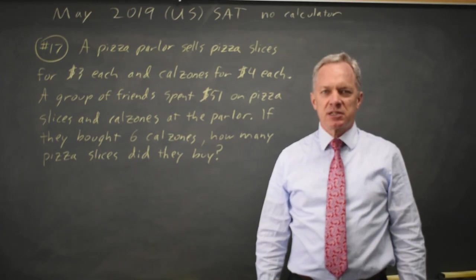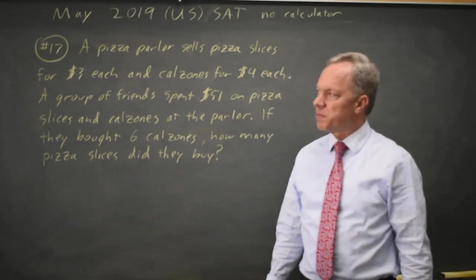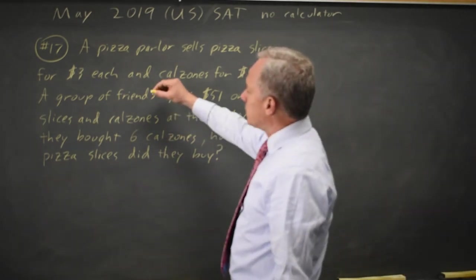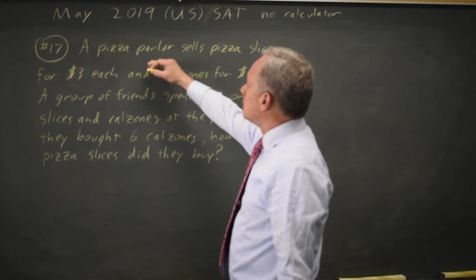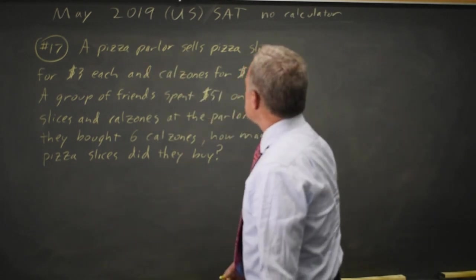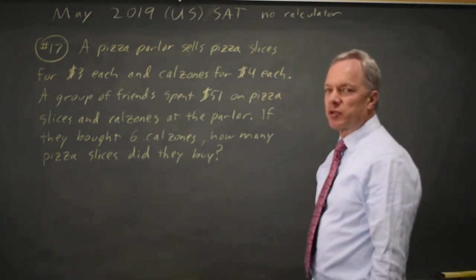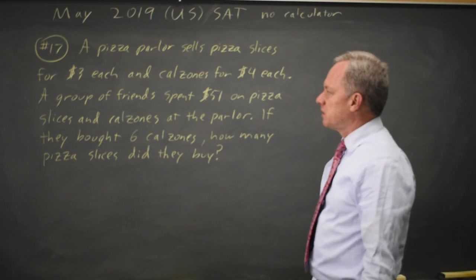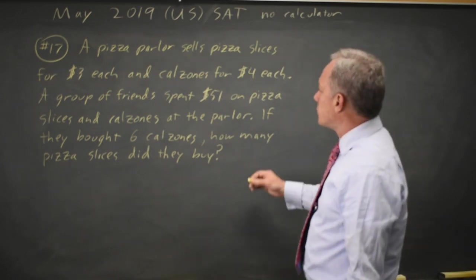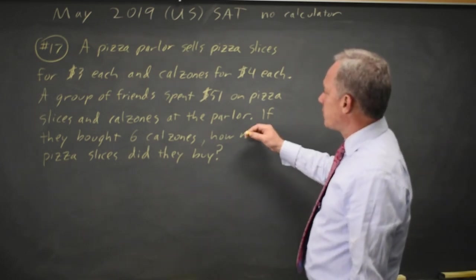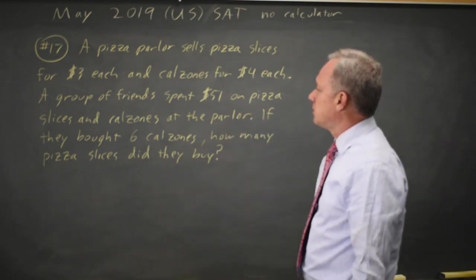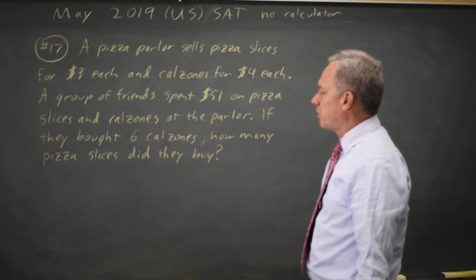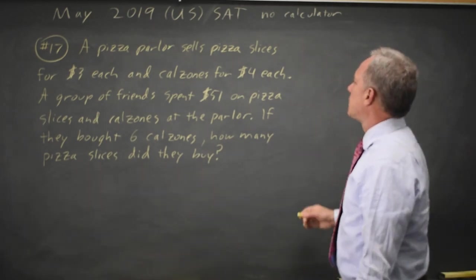This is non-calculator question 17 from the May 2019 U.S. exam. A pizza parlor sells pizza slices for $3 each and calzones for $4 each. If a group spends $51 on pizza and calzones and they bought six calzones, how many pizzas did they buy?